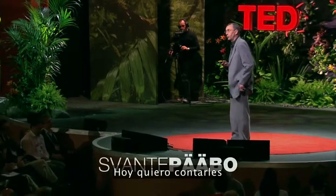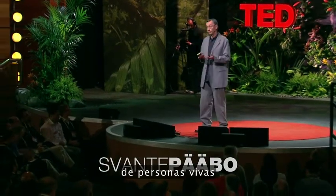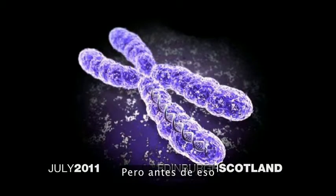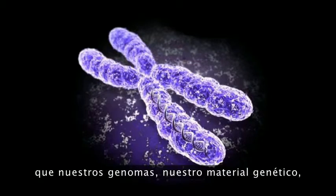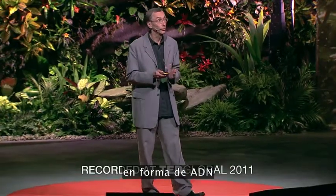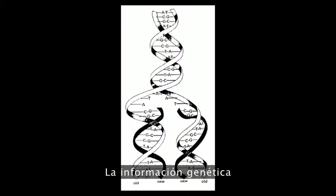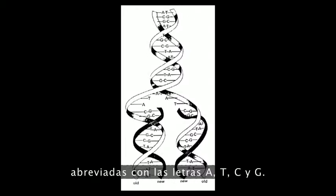What I want to talk to you about is what we can learn from studying the genomes of living people and extinct humans. But before doing that, I just briefly want to remind you about what you already know: our genomes, our genetic material, are stored in almost all cells in our bodies on chromosomes in the form of DNA, which is this famous double helical molecule. The genetic information is contained in the form of the sequence of four bases, abbreviated with the letters A, T, C and G.